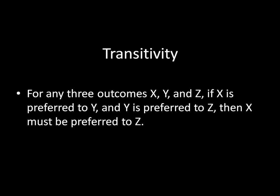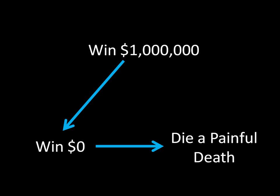This makes a lot of sense if you look at it visually. Imagine that we know an individual has the following two preferences: he likes winning a million dollars over winning zero dollars, and he likes winning zero dollars over dying a painful death. Transitivity implies that if we cut out that middleman — winning zero dollars — the individual prefers winning a million dollars to dying a painful death.